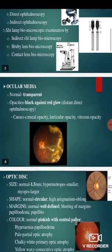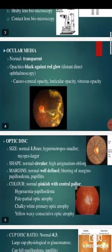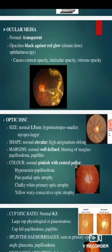There is an important term: ocular media. Normally the ocular media is transparent. There will be opacities in the ocular media appearing as black color against the red glow, which will be seen in distant direct ophthalmoscopy. The causes of such opacity are corneal opacity, lenticular opacity, and vitreous opacity.